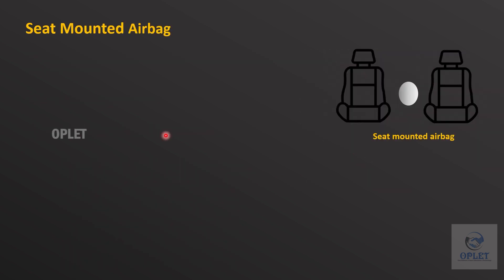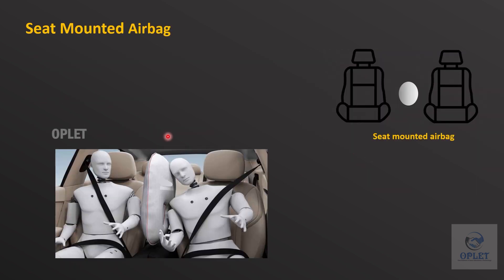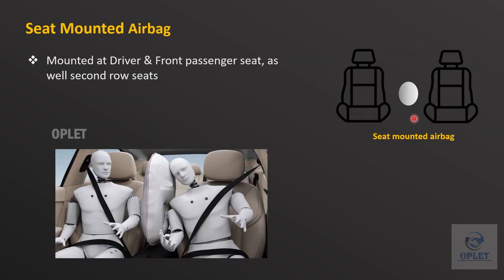Seat mounted airbags are mounted at the driver seat, front passenger seat, as well as the second row seats. They are useful to prevent head and neck injuries during a collision.